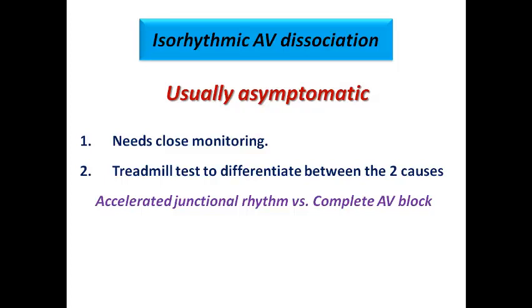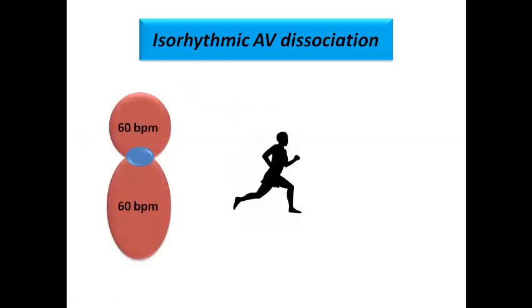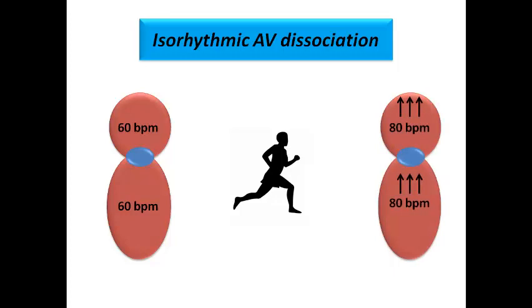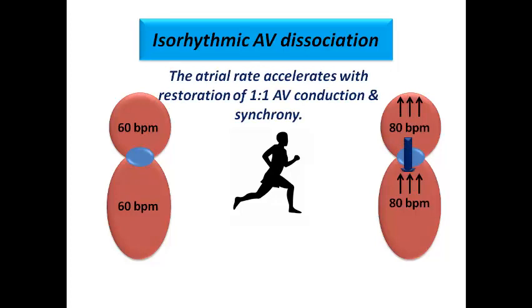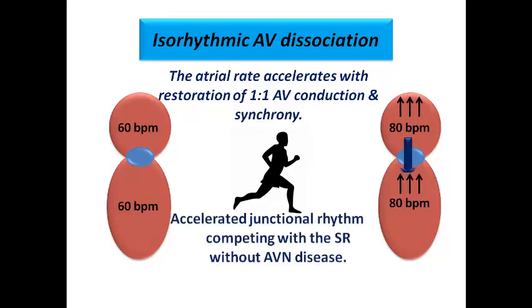The patient needs admission on a monitored bed and a treadmill test. In the first example, a patient with isorhythmic AV dissociation at 60 bpm undergoes treadmill testing: both the atrial and ventricular rates increase together, meaning intrinsic AV conduction is restored. The atrial rate acceleration restores one-to-one AV conduction and synchronization, so there is no longer dissociation. This confirms no AV node problem — the accelerated junctional rhythm stops competing, and the ventricle follows the atrium. This is the common benign finding seen in athletes.